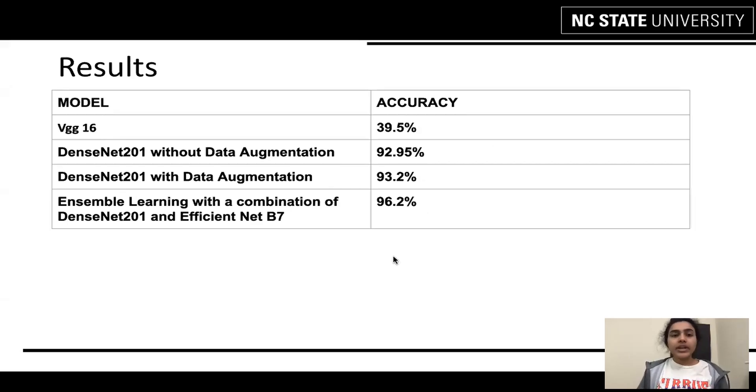The final results that we have got were, in case of ensemble learning of DenseNet-201 and EfficientNet-B7, we have got 96.2%. Whereas, only with transfer learning models, we have got 93.2%. Therefore, a 3% improvement in case of ensemble learning.